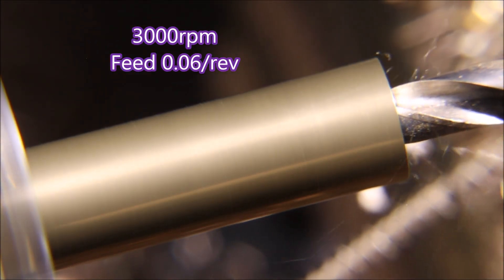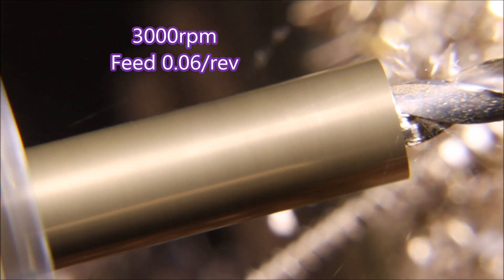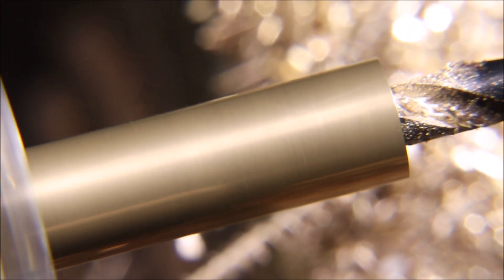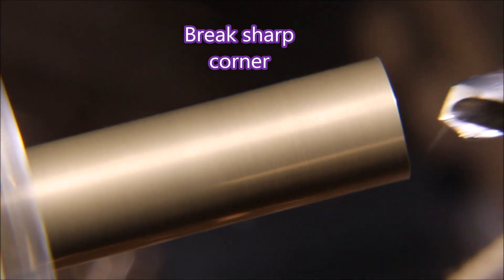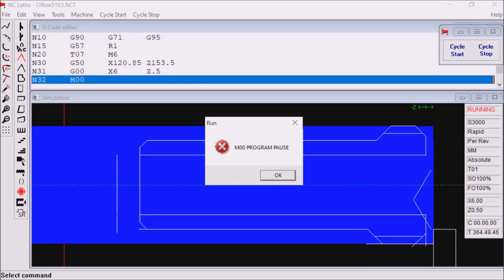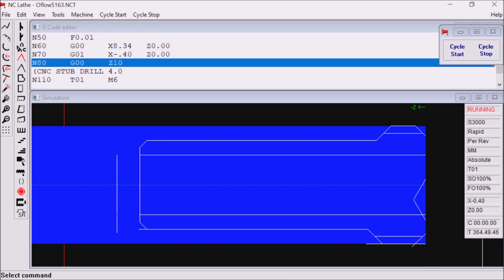So I didn't worry about it. That's a standard 4mm stub drill doing the job quite nicely, and we go back in just to break the sharp edge. Here's the simulation with the parting tool being used as a stop.